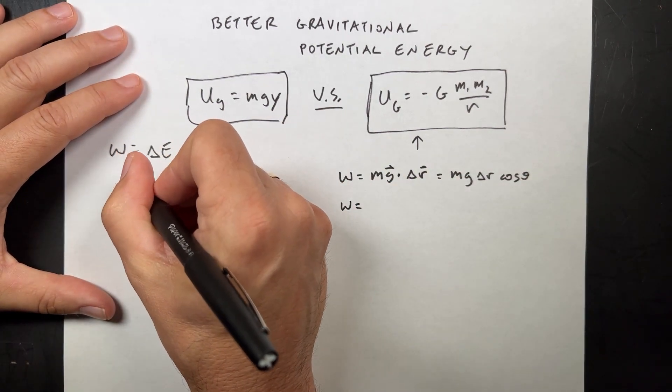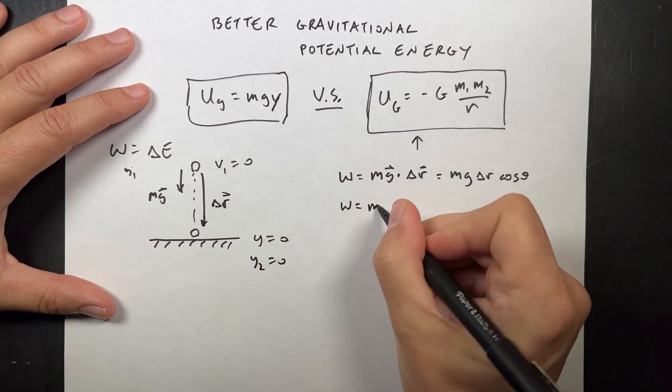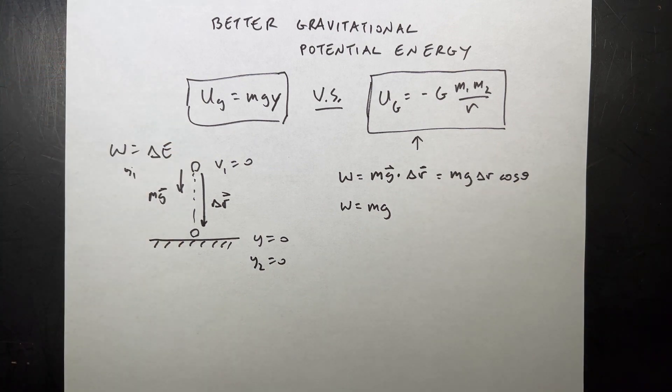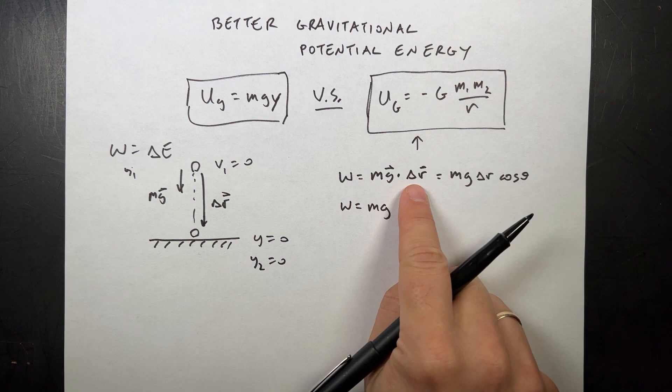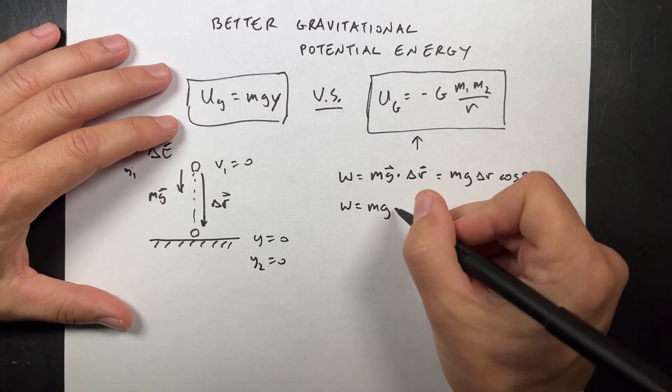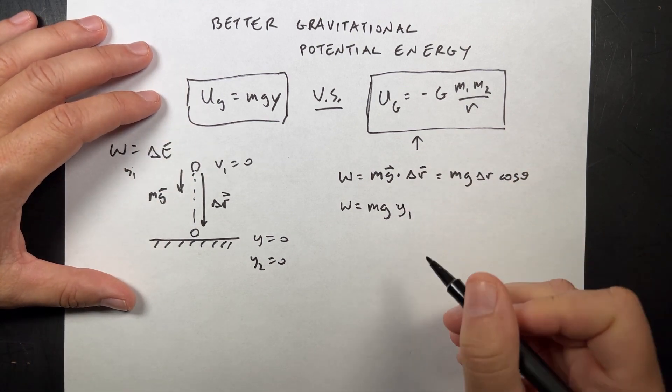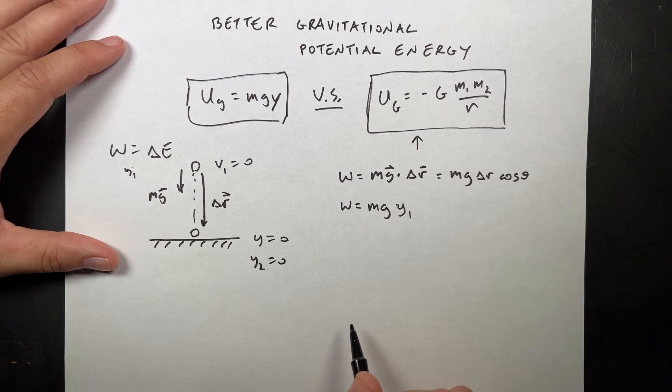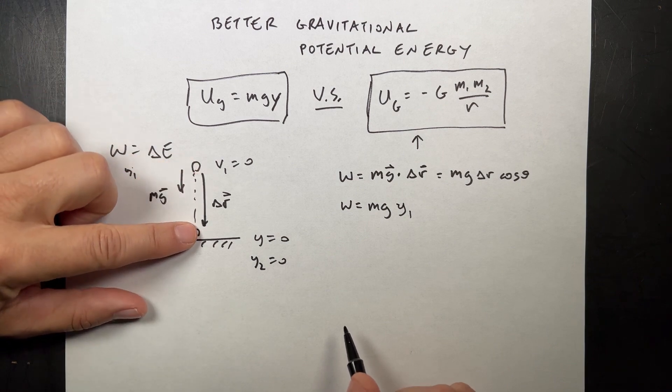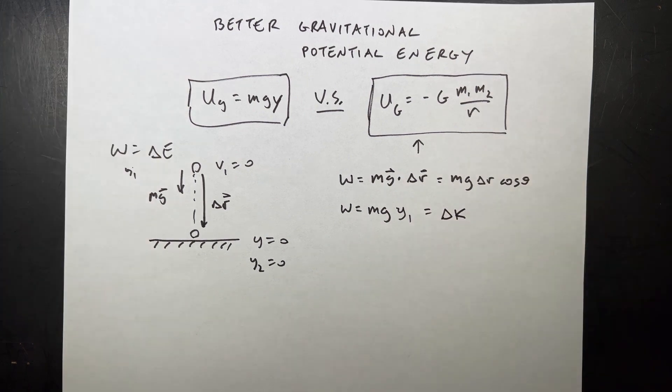Theta is the angle between these two vectors, which is 0, so this is 1. The work done is positive. If I say this is y1 and y2 equals 0, then I get mg, the change in y is going to be - I've already taken into account the direction. The distance is going to be y1 minus 0. So that's the work done by gravity. It's positive.